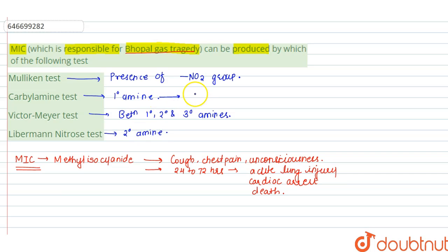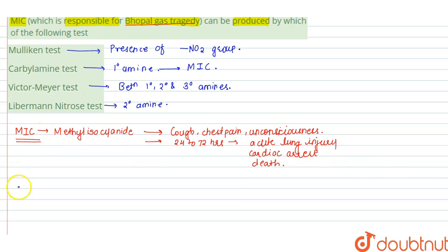Now using the Carbolamine test we can produce methyl isocyanide, that is MIC. So what is the Carbolamine test?